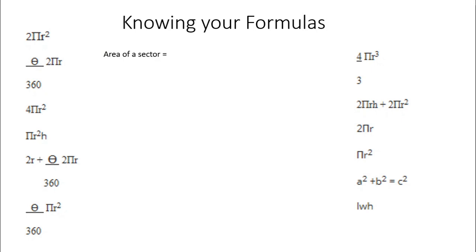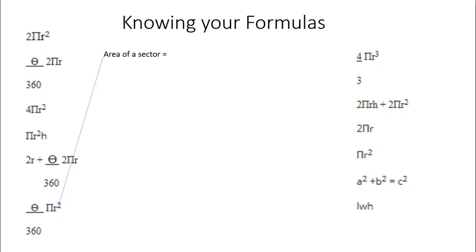The first one being the area of a sector, and that's going to be a fraction of the area of the whole circle. So the area of the circle is pi r squared. The fraction of the circle depends on the angle at the center, so that's the angle divided by 360 times pi r squared.